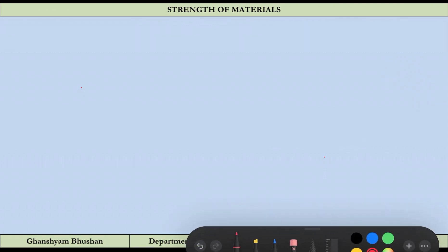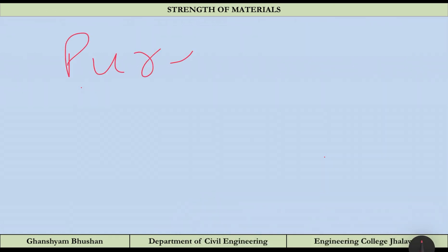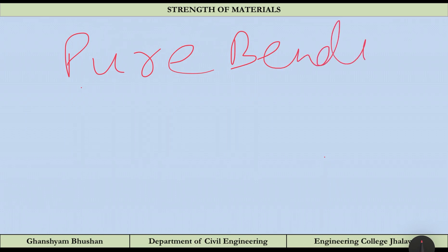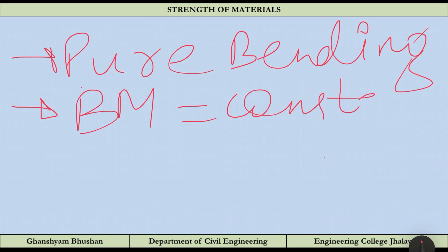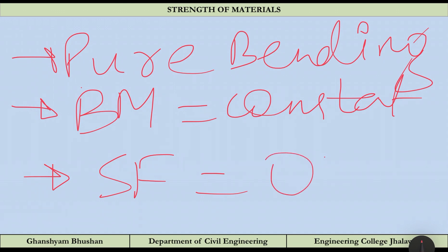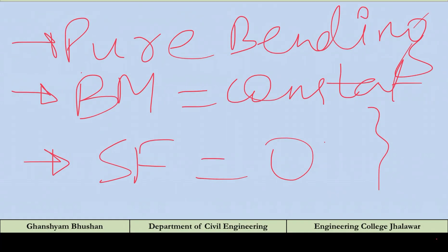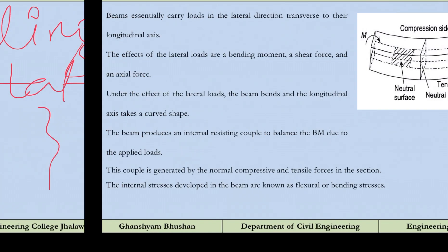To summarize the key points for pure bending: first, bending in a question means pure bending. Second, the bending moment is constant. Third, the shear force is zero in that particular portion where the bending moment is constant. You must be very clear about these three points.